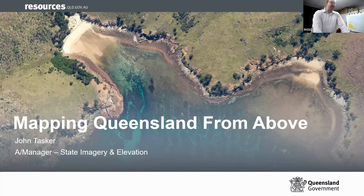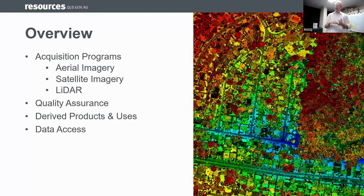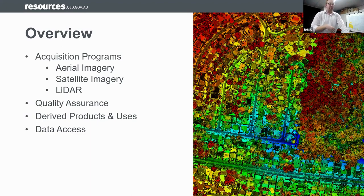Tonight I want to give you an overview of our acquisition programs, starting with aerial imagery, satellite imagery, and lidar data sets, then a deep dive into quality assurance — the often forgotten but really critical step in how we deliver the highest quality data sets for any use case. I'll also give insight on derived products and uses of these data sets, and finish by talking about data access and how you can access these data sets at no or little charge.